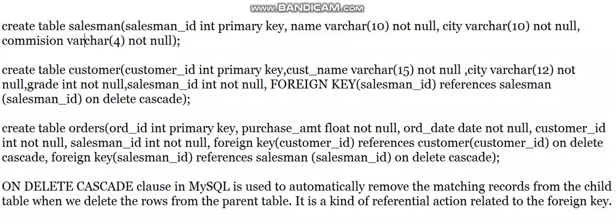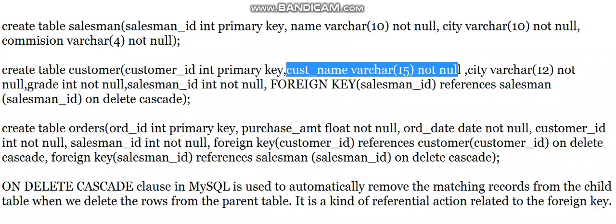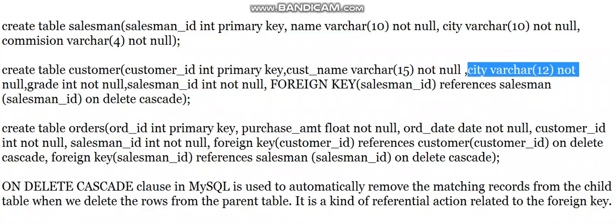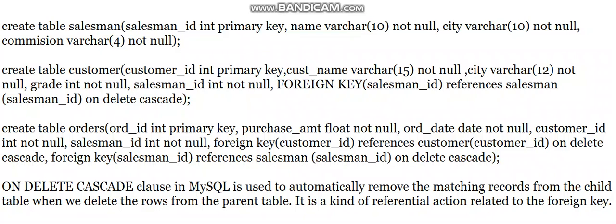The second table is customer. Based on the schema diagram, salesman is the parent table and customer and orders are child tables. Customer is dependent on salesman via salesman_ID. The customer table has: customer_ID as INT primary key, customer_name with NOT NULL, city with NOT NULL, and grade as INTEGER with NOT NULL.